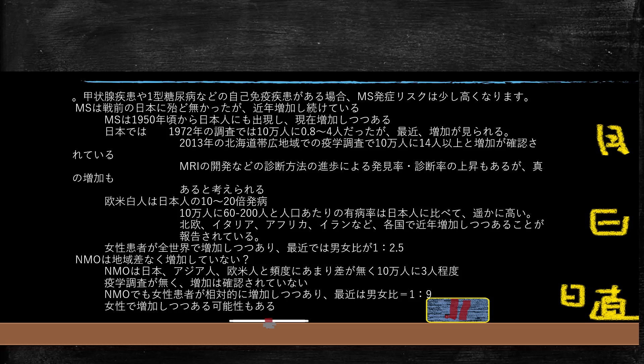次は自己免疫疾患ですね。一型糖尿病とか甲状腺の病気とか、膠原病とか持っている方は、この多発性硬化症のリスクが高いということですね。また、1950年より前の日本にはこの病気はないということですね。1972年の調査では、10万人当たり0.8人から4人ぐらいです。